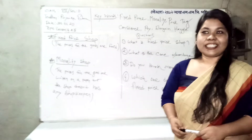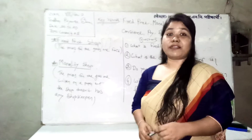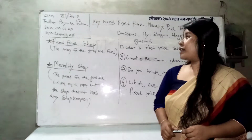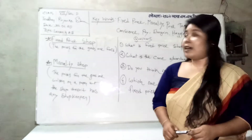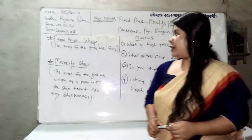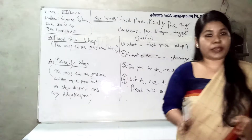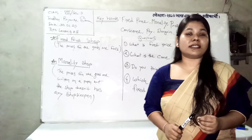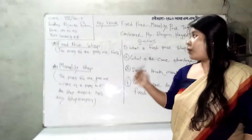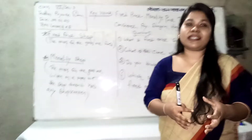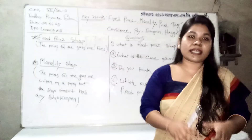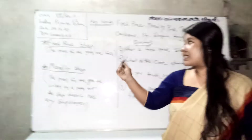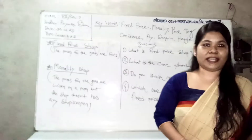Friends, hope you are doing well. Today we are going to have class on Unit 4, Lessons 4 and 5. I'm not touching Lesson 3 because it is about a poem. Lessons 4 and 5 have some similarities and are categorized within the same theme, so we are going to discuss Fixed Price Shop and Morality Shop.